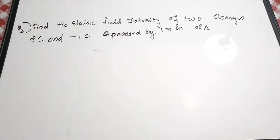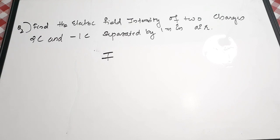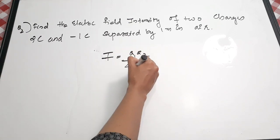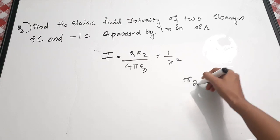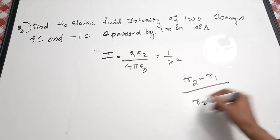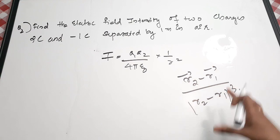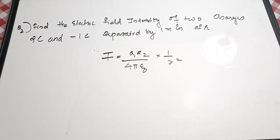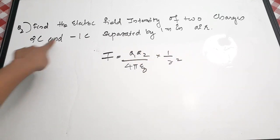The second question: find the electric field intensity due to two charges — 2 coulombs and minus 1 coulomb — separated by 1 meter. First write the equation for force: F = q₁q₂ / (4πε₀) × 1/r². We've discussed this in the formula revision video. In vector form it includes (r₂ - r₁)/|r₂ - r₁|³, which simplifies to 1/r².